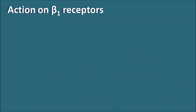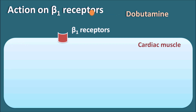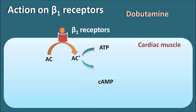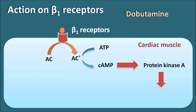Now let us see the action of Dobutamine on the beta-1 receptors. Beta-1 receptors are mainly present on the cardiac muscle. When Dobutamine attaches to the beta-1 receptors, the G-protein coupled receptors are activated, which will activate the enzyme adenylyl cyclase. Once adenylyl cyclase is activated, it converts ATP into cyclic AMP. Cyclic AMP is a very important secondary messenger which will stimulate protein kinase A.